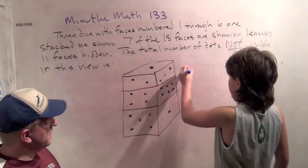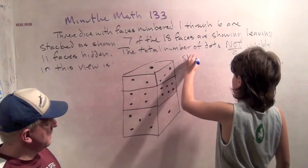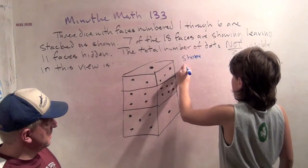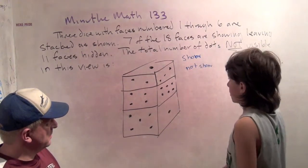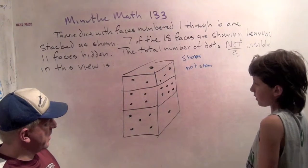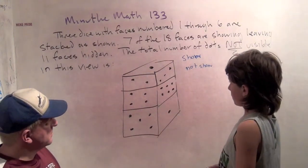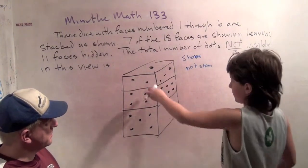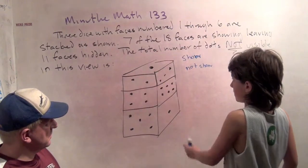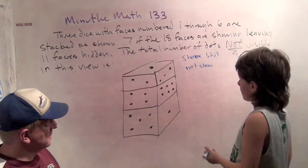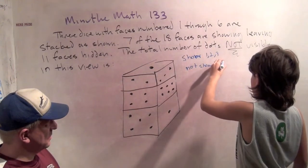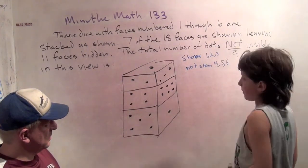Well, for this dice, for the show and not show, I'll do faces for the number of dots. Faces 1, 2, and 3 show. And 4, 5, and 6 don't show.